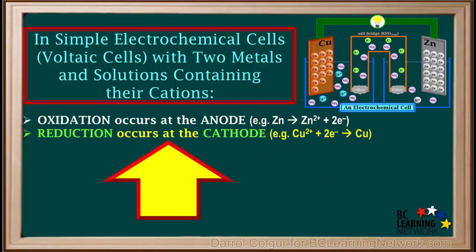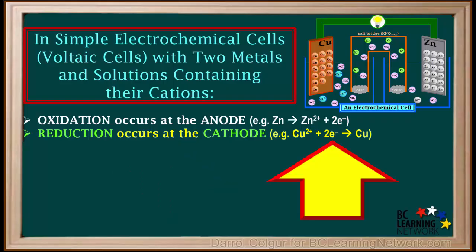Reduction occurs at the cathode. Both reduction and cathode start with consonants. For example, in the cell we've shown here, copper 2 plus cations are reduced to copper metal atoms at the cathode.